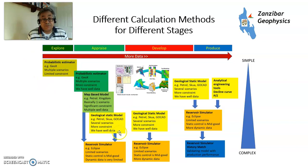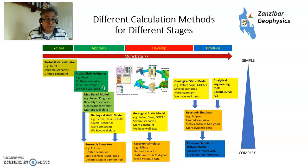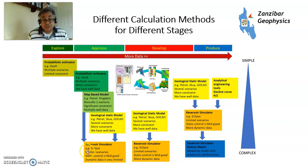There are different scenarios where you use volumetrics. At the prospect stage, you do a probabilistic estimate in a program such as GeoX with multiple scenarios and limited constraint. At the appraisal stage, you may still do probabilistic volumetric estimates, or you may build map-based models in software such as Petrel — essentially one scenario with significant constraint when you have well data. With more data further into field development, you build a geological static model in software like Petrel, Skua, or Go-CAD, model several scenarios, now with well data, and feed that into a reservoir simulator such as Eclipse.